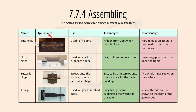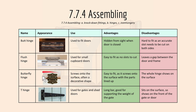Then we have different assembling methods like hinges. A butt hinge is used for doors — it's hidden from the side when the door is closed, but it's hard to fit as an accurate slot needs to be cut. A flush hinge is used for small cupboard doors and is easy to fit as there's no slot to cut, but it leaves a gap between the door and the frame. A butterfly hinge screws onto the surface, often as a decorative shape, and is easy to fit when parts are lined up, but the whole hinge shows on the surface.